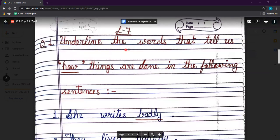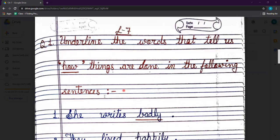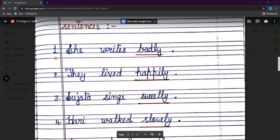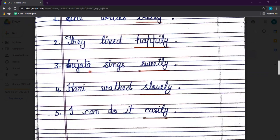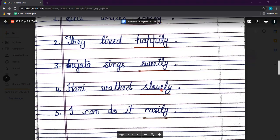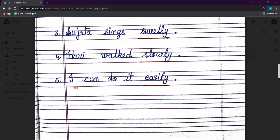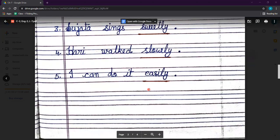No. 1 Question, underline the words that tell us how things are done in the following sentences. No. 1, she writes badly. No. 2, they lived happily. No. 3, Sujata sings sweetly. No. 4, Hari walked slowly. No. 5, I can do it easily. Okay?